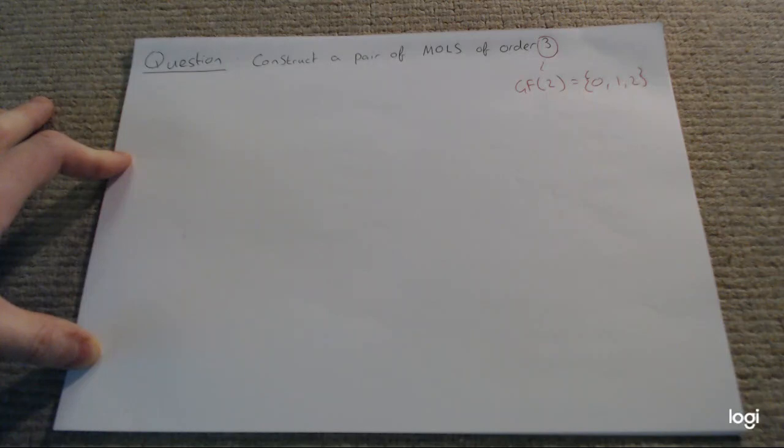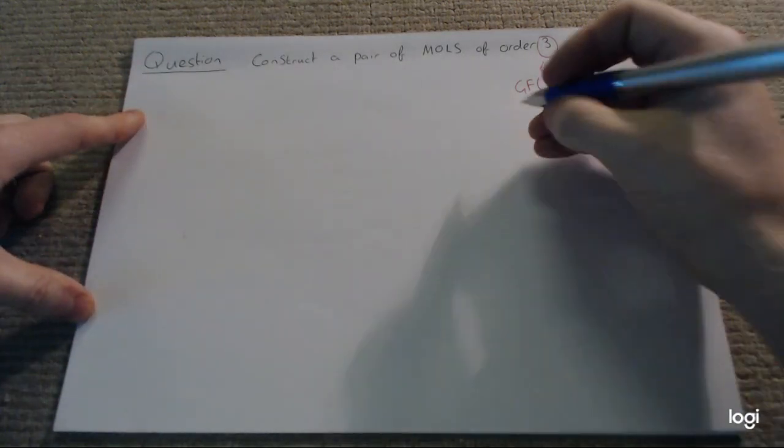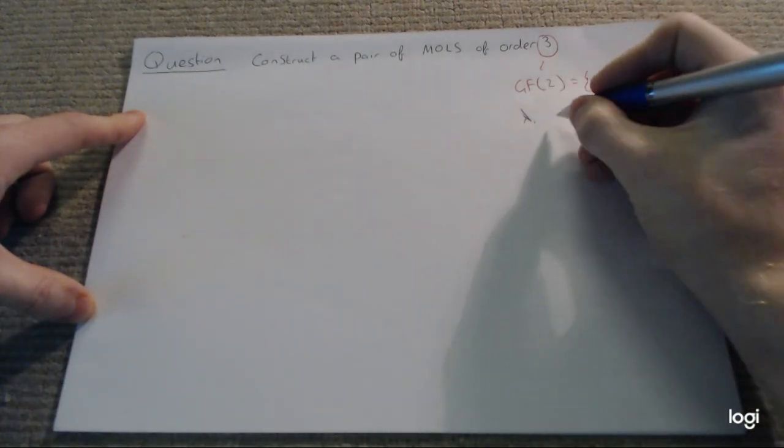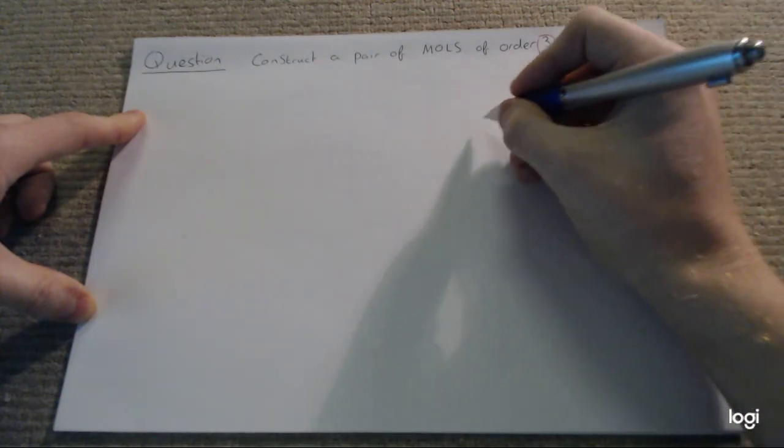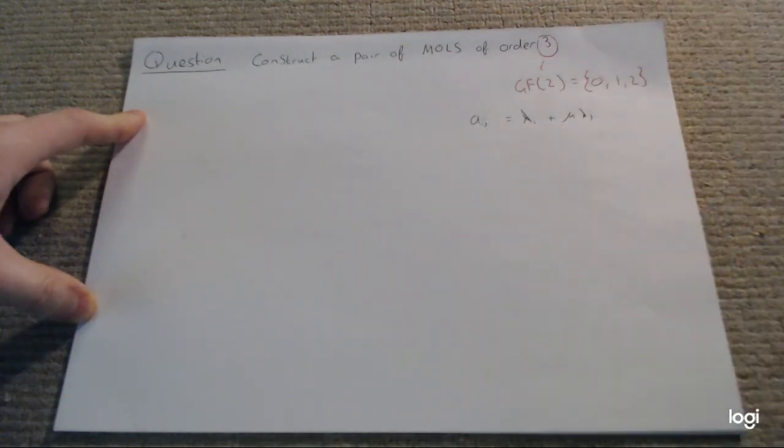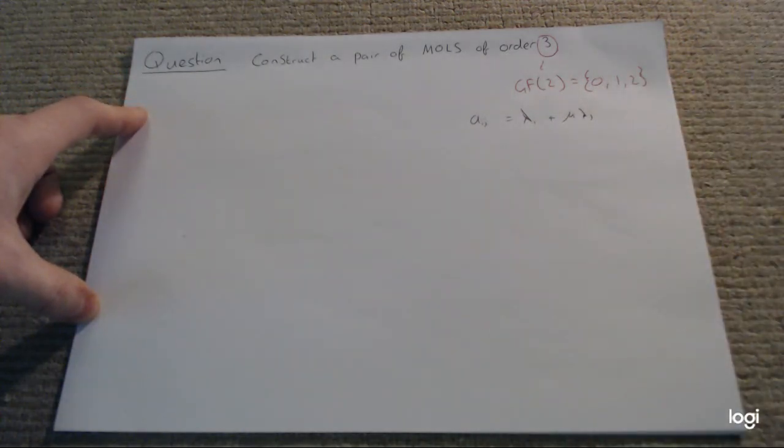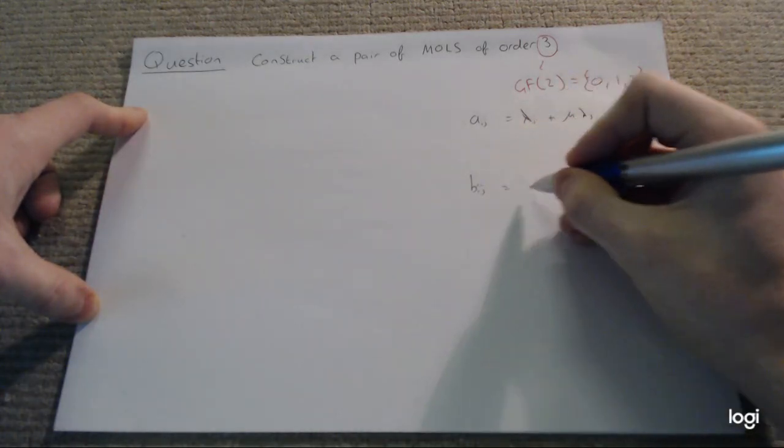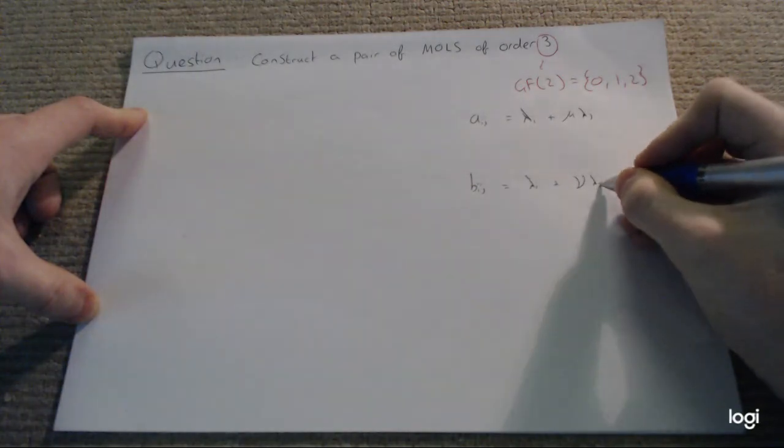We have a couple of equations to help us construct these. The first being lambda i plus mu lambda j, and we'll set that equal to aij. Both i and j run through 0, 1, and 2 because we've only got 3 numbers. Our second one we'll call bij, and that's equal to lambda i plus nu lambda j.